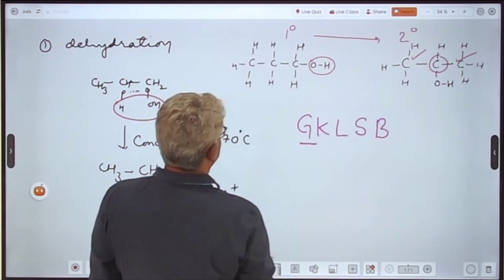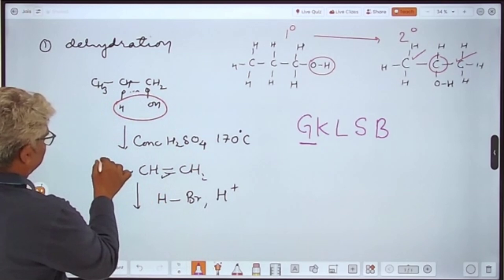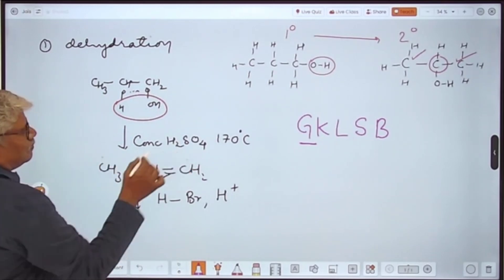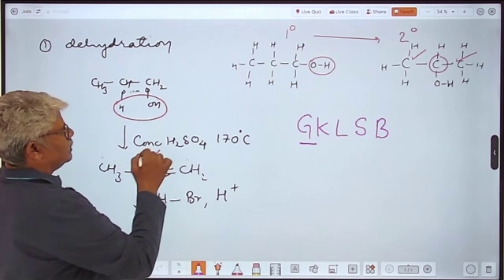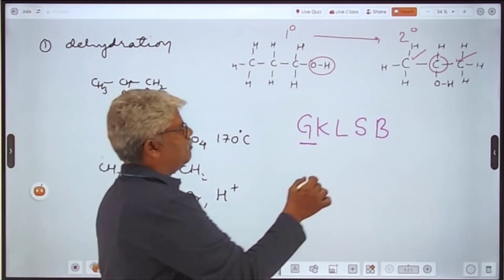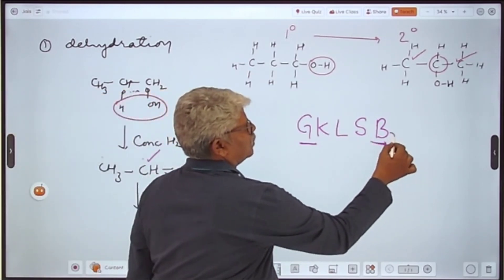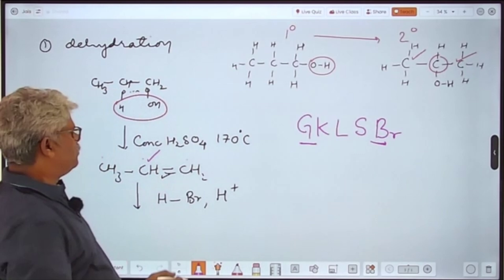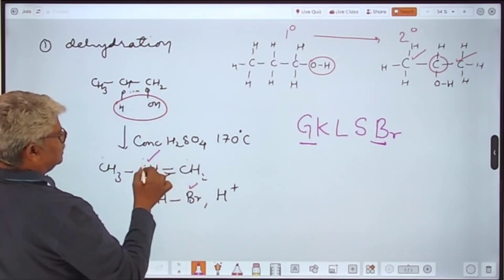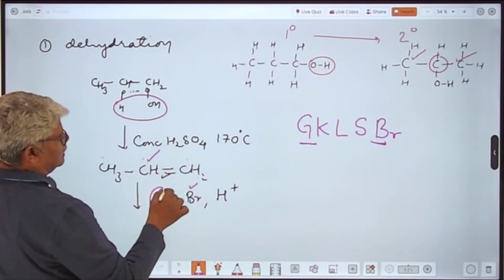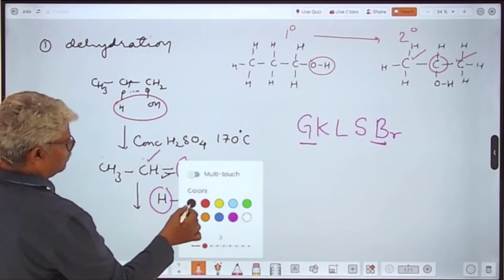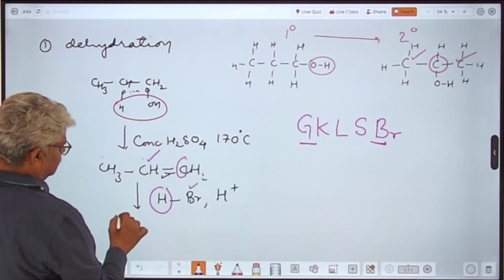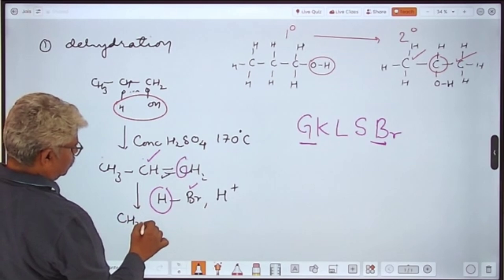Garib means out of these three carbons, which has least hydrogen, this carbon. And B stands for bromine. So bromine will attach to this carbon and hydrogen will attach to this carbon. This will result in formation of 2-bromopropane.